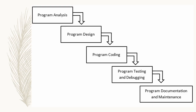In this figure, we can see the program development process. The first step is program analysis. Second step is program design. Third step is program coding. Fourth step is program testing and debugging. And the last is program documentation and maintenance. However, since we are in Computer Programming 1, which is the most basic level, we will only cover up to program testing and debugging — the fifth step will not be included.